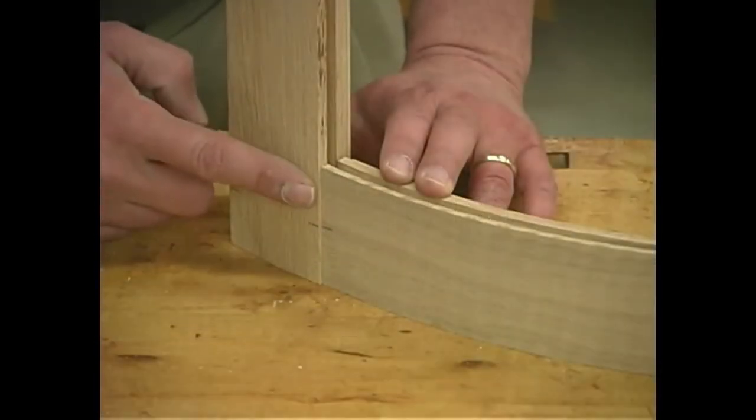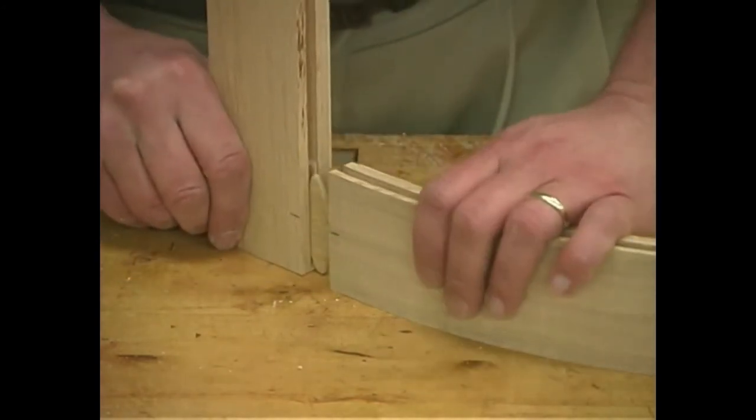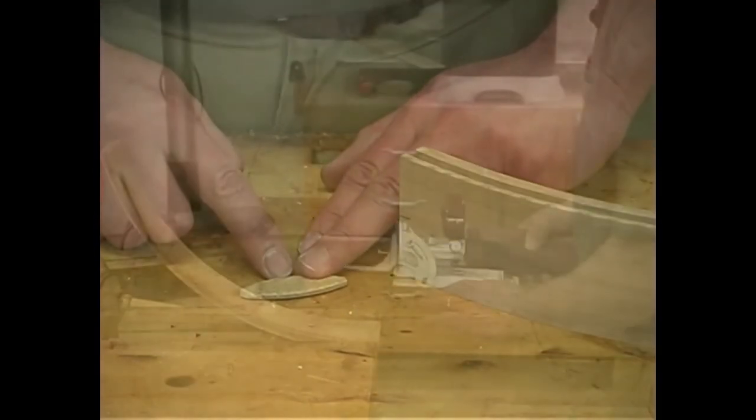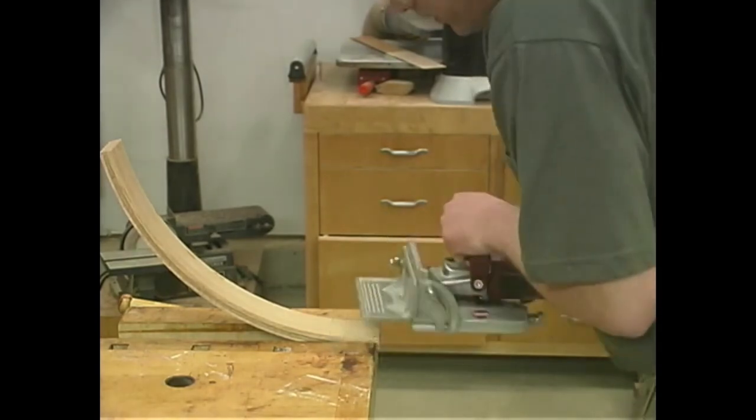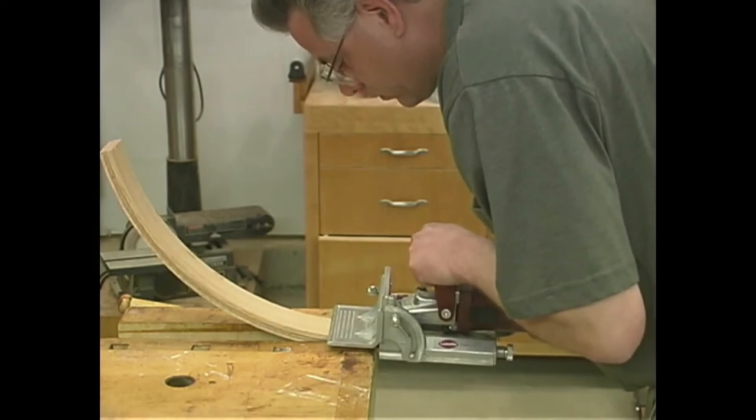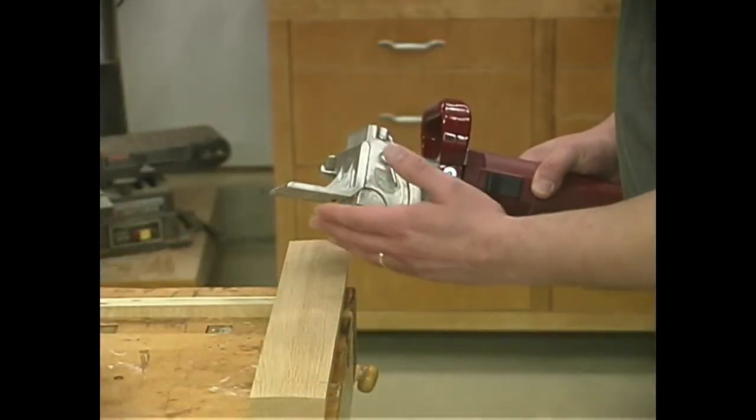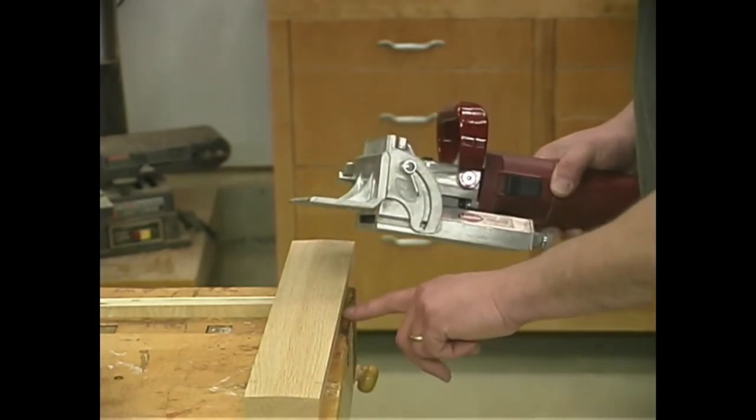When we join the rails to the legs, we want a 1 1/8 inch reveal between the leg and the rail - the leg should stand proud. To join the legs to the rails, we're going to be using number 10 biscuits. When cutting the biscuit slots on the curved rails, I find the biscuit joiner was a little more stable by referencing the inside or the concave face. When switching between cutting the biscuit slots on the rails and your legs, be sure to adjust your fence over so you get that 1 1/8 inch reveal.